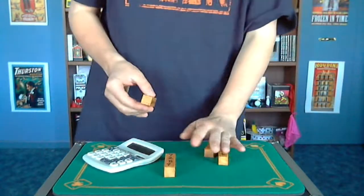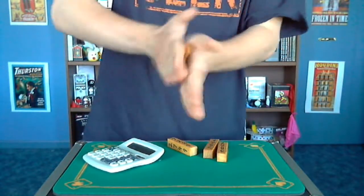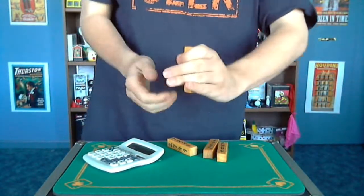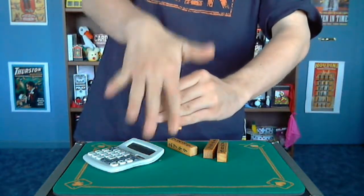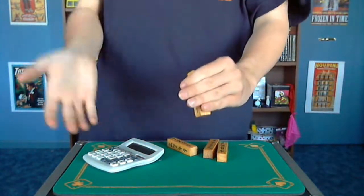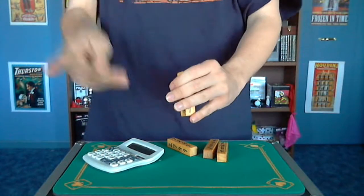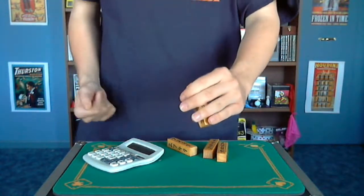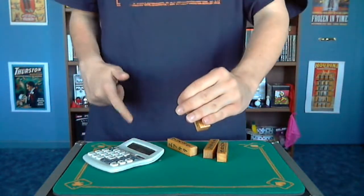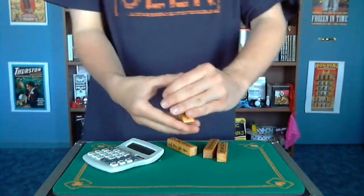So, we'll say we choose this die, and we'll give it a little roll in my hands. Now we're going to add all the numbers that are face up on this side together. But before we do that though, I'm going to tell you the solution before I punch it into the calculator because my math is that quick.